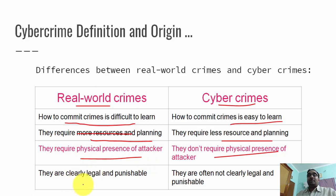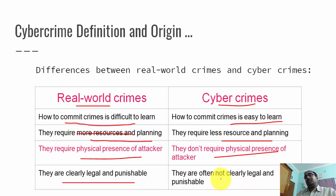Real world crimes are clearly legal and punishable — for every crime there is a section in the law and the person will be punished accordingly. But when it comes to cyber crimes, there are sections but they are not clear — they are fuzzy. So those are the differences between real world crimes and cyber crimes. Thank you.